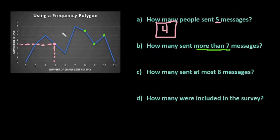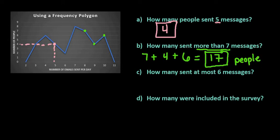So we would look to see that eight, there were seven that sent eight messages. There were four that sent nine messages and there are six that sent ten messages. So we would just add this together and we can see that 17 total people. So if I add this together I get a total of 17 people sent more than seven messages.